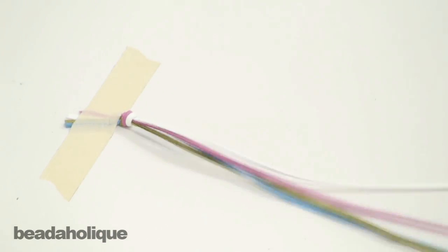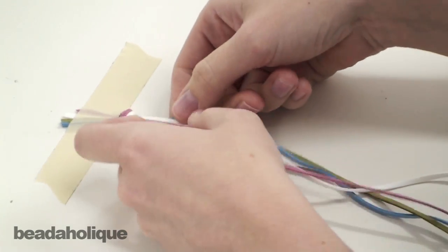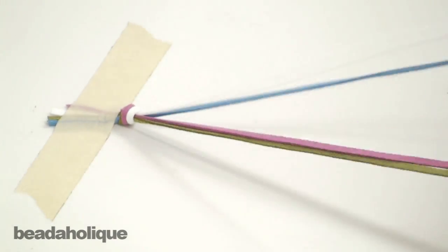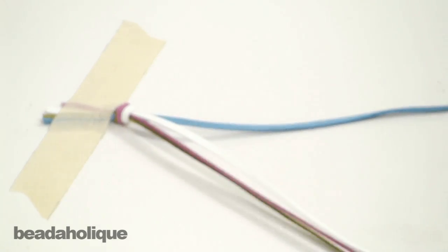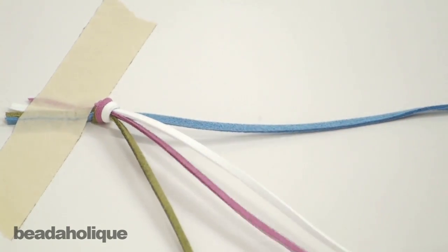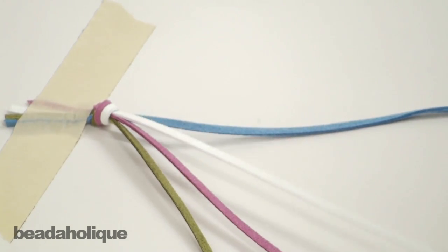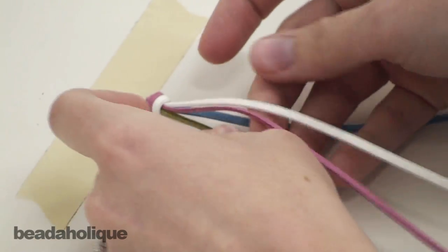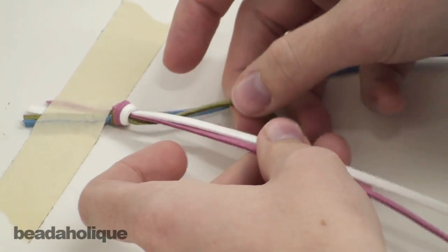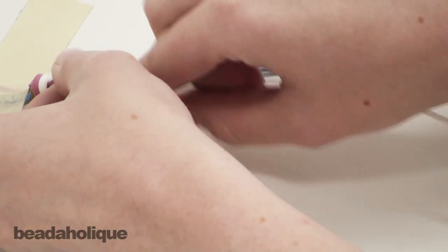This braid is pretty simple. Go ahead and separate your strands. Now you're going to take the leftmost braid and you're going to bring it around the middle two and then through the center of them.